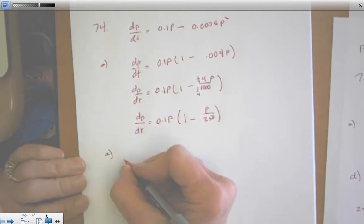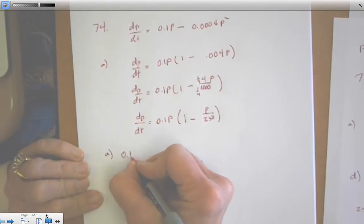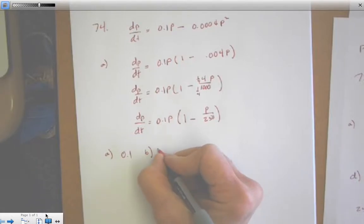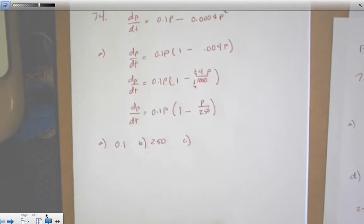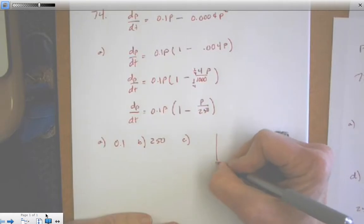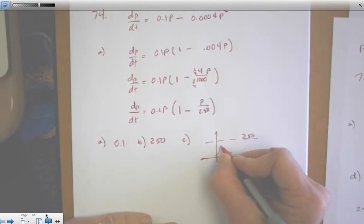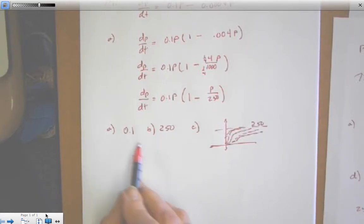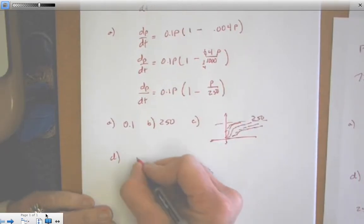A asks for the value of K, 0.1. B asks for carrying capacity, 250. C asks for a slope field. So the slope field I know has a limit up to 250. And from its initial value, whatever that initial condition is, whatever the value of K, it's going to have quick growth, but then will start leveling off. And K just determines, this 0.1 will determine how quickly that growth happens. D asks for determining the value of P at which the population growth is at its greatest.